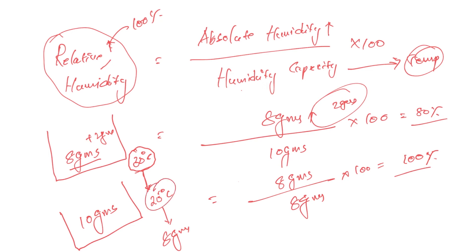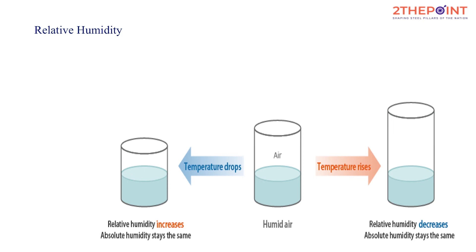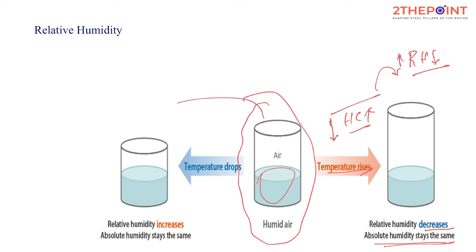At 25 degrees Celsius the humidity capacity is 8 grams. The absolute humidity is already 8 grams, so the unit volume of air is saturated — its maximum limit has been reached. Relative humidity is 100 percent. If we increase temperature, humidity capacity increases and relative humidity decreases while absolute humidity stays the same. If temperature drops, humidity capacity drops and relative humidity rises toward 100 percent.